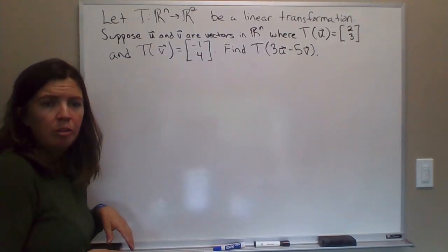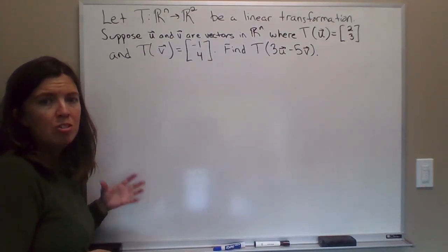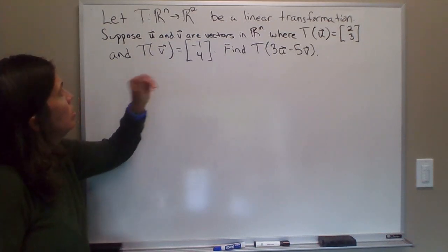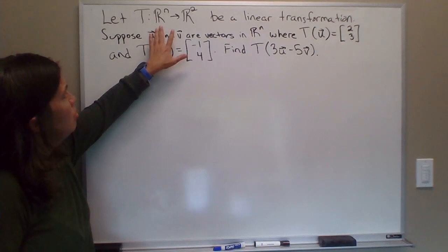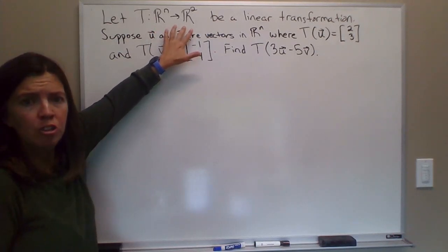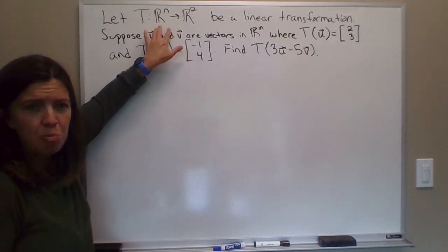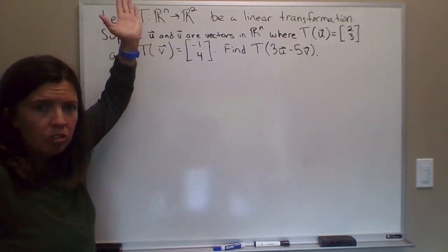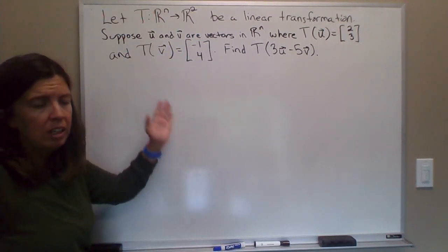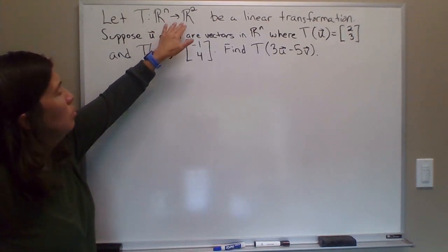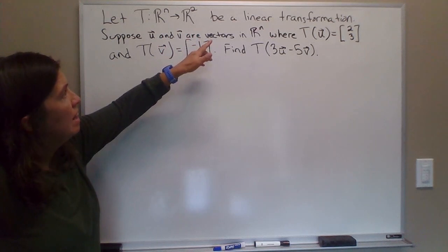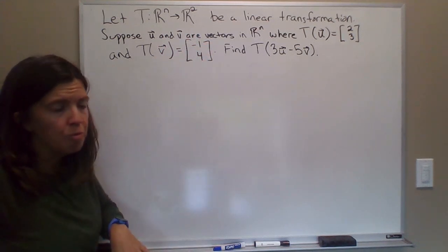Now we'll use the properties of linear transformations to compute the output for a given vector. Suppose T is a transformation from Rn to R2. So we're not specifying the exact domain, just that it's a column vector with any number of entries. We are specifying that the output is a vector in R2 and that this is a linear transformation.